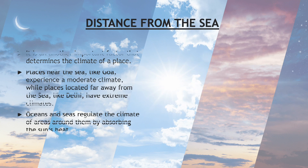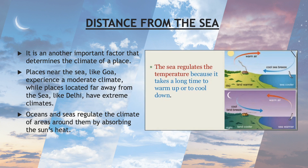Distance from the sea is another important factor that determines the climate of a place. Places near the sea like Goa experience a moderate climate, while places located far away from the sea like Delhi have extreme climates. Oceans and seas regulate the climate of areas around them by absorbing the sun's heat.